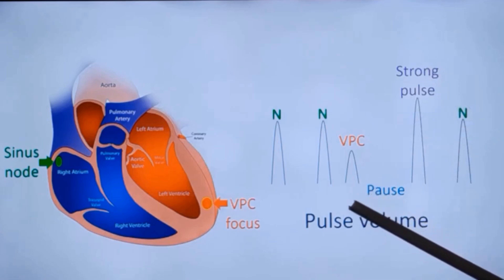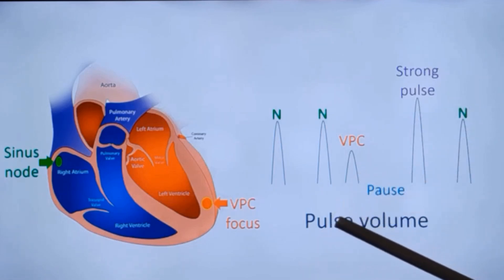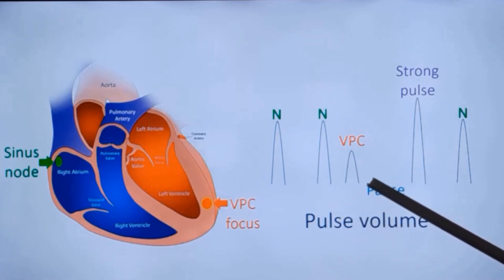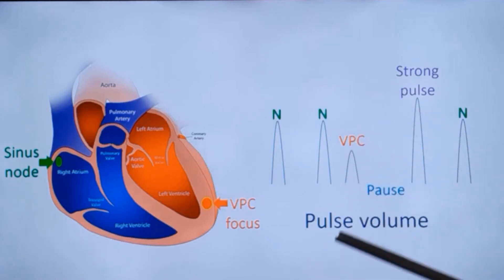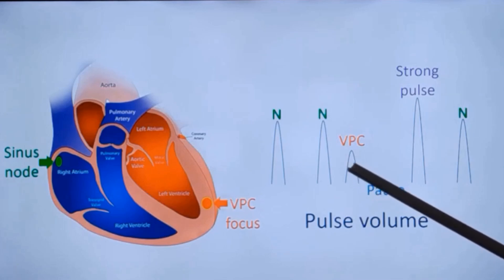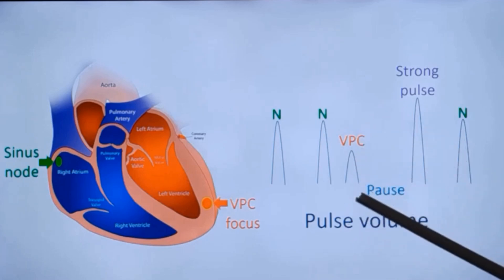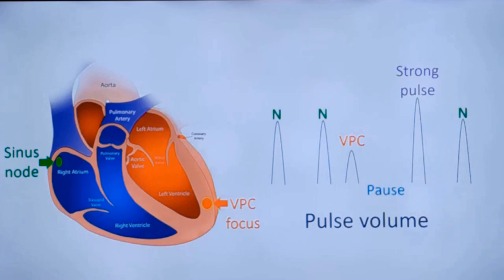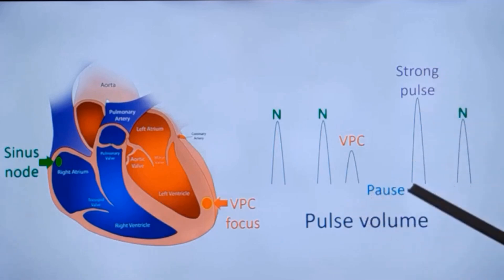Most often it is the pause that many patients feel. Persons regularly checking their pulse will feel this pause because the earlier ectopic pulse may be too weak to feel — heart sounds will be there but pulse may not be palpable. So often the pause is felt. Secondly, the strong pulse after the pause is associated with a stronger contraction of the heart muscle, so a palpitation is also felt.